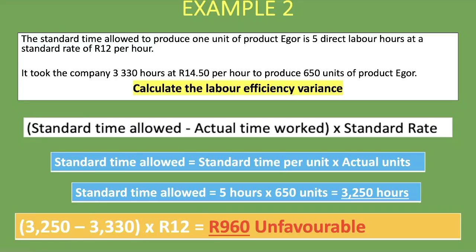Possible reasons why this variance is unfavorable: workers were not well trained to produce the units efficiently, we had substandard or poor quality materials causing the work to take longer, or there was an error in our original calculation of the 5 direct labor hours per unit standard. Check your answer and identify where you may have gone wrong if it differs.